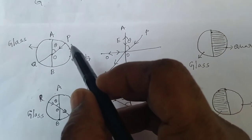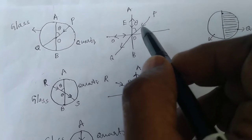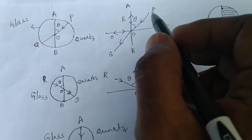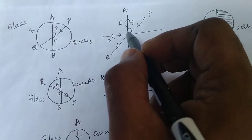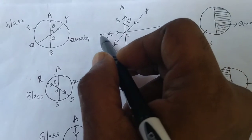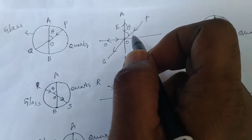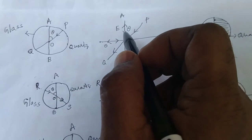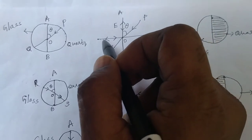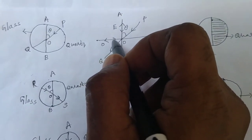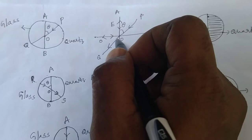Suppose the plane polarized light is along the PQ direction. The light passing through the quartz plate in the PO direction splits into two components: the ordinary component moving in one direction and the extraordinary component moving in another direction. Due to a phase difference, the extraordinary ray is reversed and comes back along a certain direction, and the ordinary component also comes back — these two components combine.